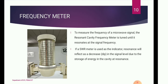The frequency meter is used to measure the frequency range of a microwave signal. Using the dial, it is tuned to a particular frequency range to find the exact frequency where there is a dipping point — a fluctuation in the signal level at the moment the frequency gets matched. If an SWR meter is used as an indicator, the resonance reflects as a decrease or dip in the signal level due to storage of energy in the cavity at resonance.